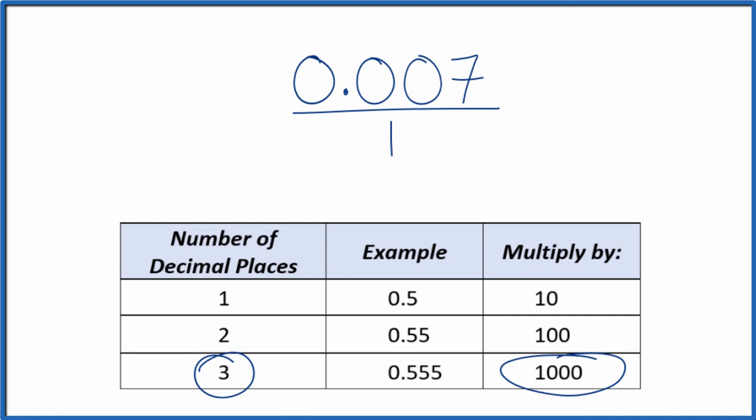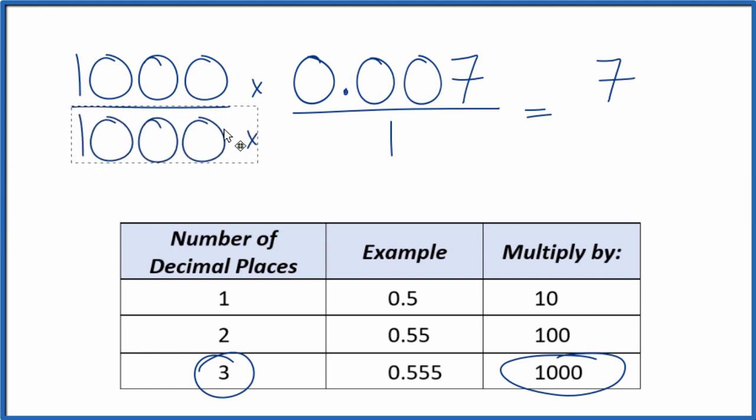So we take and multiply 1,000 times 0.007. We end up with the whole number 7. So we have our whole number. But we can't just multiply the numerator by 1,000. We also need to multiply the denominator by 1,000.